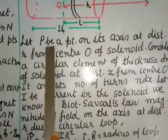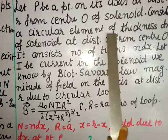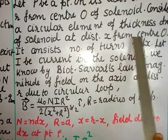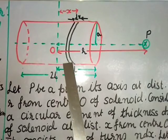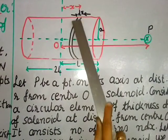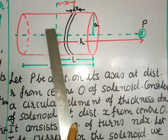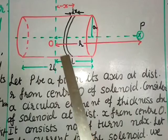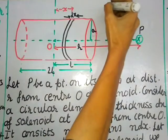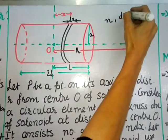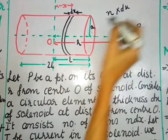We want to find the magnetic field at point P on the axis at distance r from the center O. Consider a circular element of thickness dx at distance x from center O. This element has thickness dx, and since n is the number of turns per unit length, the number of turns in this element will be n·dx.